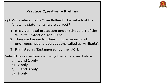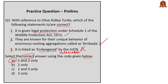The third question is: with reference to Olive Ridley Turtle, which of the following statements is or are correct? Statement 1: it is given legal protection under Schedule 1 of the Wildlife Protection Act 1972. Statement 2: they are known for their unique behavior of enormous nesting aggregations called aribada. Statement 3: it is listed as endangered by the IUCN. As we know, the first statement is correct because Schedule 1 of the Wildlife Protection Act 1972 prohibits hunting and trade of Olive Ridley turtles. Option 2 is also correct as discussed. Option 3 is false because Olive Ridley turtles are in the IUCN Red List under the vulnerable category, not the endangered status. Hence, options one and two only is the correct answer.